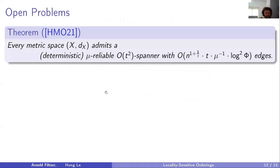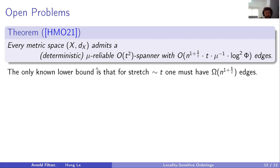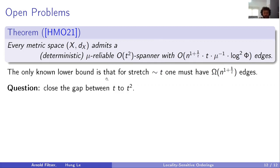Let me conclude with some open problems. The first and most interesting is about deterministic reliable spanners for general metrics. Har-Peled et al. constructed a deterministic reliable T-squared spanner with n^(1+1/T) edges. The only lower bound is n^(1+1/T) edges for stretch T, which holds even for general spanners without reliability. The question is: can we close the gap between T and T-squared? T-squared is the upper bound, T is the lower bound, and we want to know the right stretch achievable with n^(1+1/T) edges.